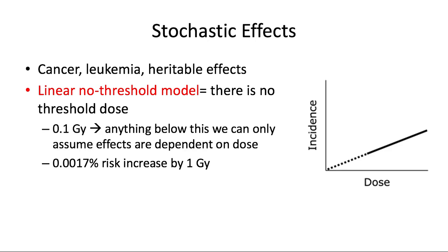Stochastic effects include cancer — including leukemia — and heritable effects that can occur in offspring after exposure of the parent. The currently agreed-upon model for stochastic effects is the linear no-threshold model. As the name states, there is no minimum threshold dose, because we're simply unsure if there's a minimum dose where these effects begin. By this model, any amount of radiation increases your risk of things like cancer, and the probability of response — rather than the severity — is proportional to the dose.